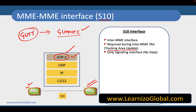Typically, a user performs a procedure called a Tracking Area Update (TAU). Whenever this TAU happens from one MME to another, it is called an inter-MME Tracking Area Update, and these MMEs need to communicate with each other. As discussed earlier, the MME handles only the signaling part, so S10 is purely a signaling interface.